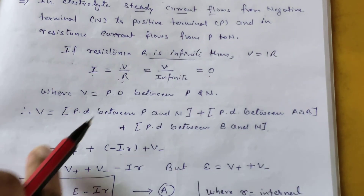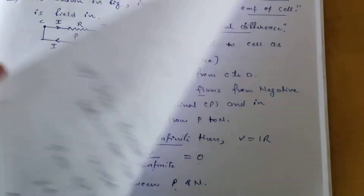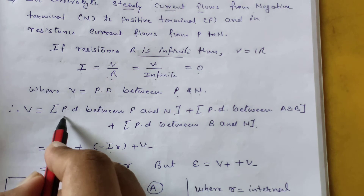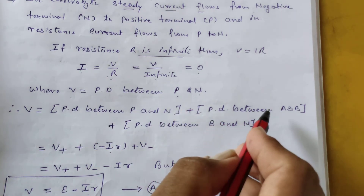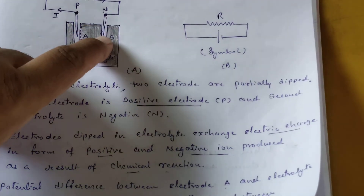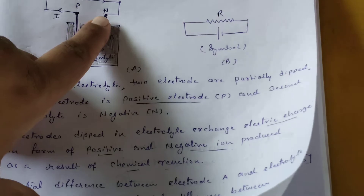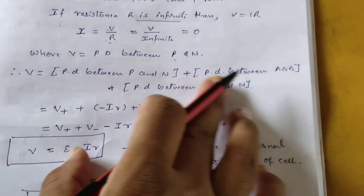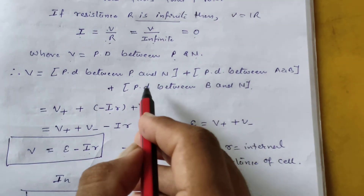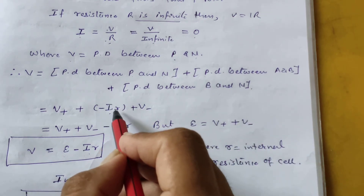Now we find the potential difference between P and N. The potential difference V between P and N equals: potential difference between P and A, plus potential difference between A and B (using Ohm's law: V = Ir, where r is the internal resistance), plus potential difference between B and N. The potential difference between P and A is V+, already established earlier.